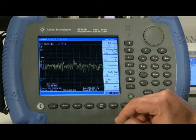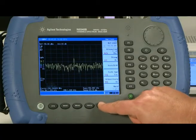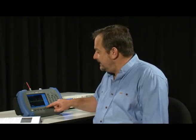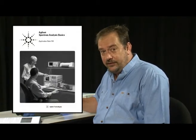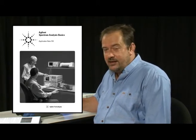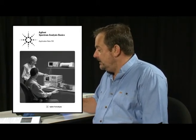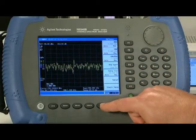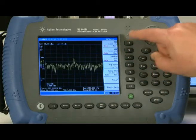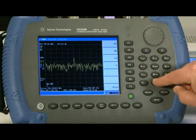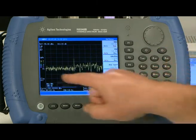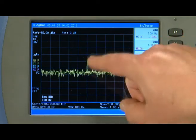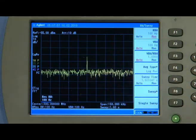Now let's reduce the resolution bandwidth. That will have the effect of reducing the noise floor. If you don't understand why that's the case take a look at application note 150 which you can download from Agilent's website. And that explains all about resolution bandwidth and Boltzmann's Law. So anyway I've pressed system bandwidth button and I'm going to reduce the resolution bandwidth down to 100 Hz. And you'll see now the noise floor immediately drops and we can see the signal, the third harmonic signal from the signal generator much more clearly on the display.